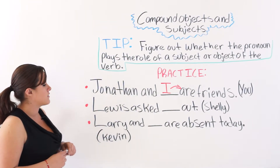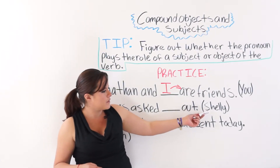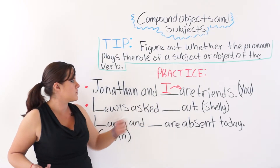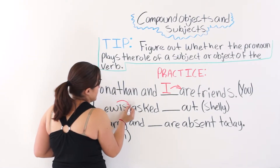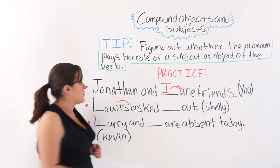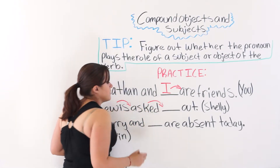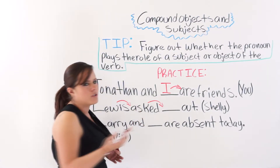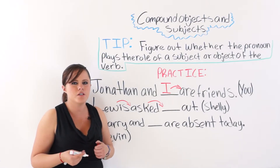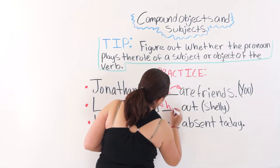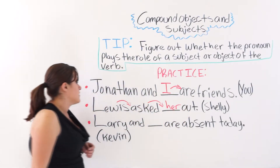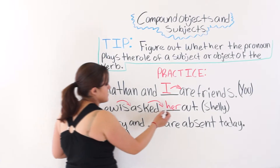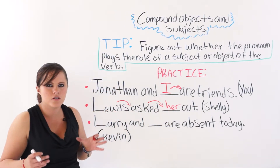The next one says 'Lewis asked ___ out.' We are talking about Shelley, a girl. Lewis is the subject of the verb, so we need an object pronoun. The object pronoun for the personal pronoun 'she' is 'her.' So the answer is 'Lewis asked her out' — we use the object pronoun because it is the object of the verb.